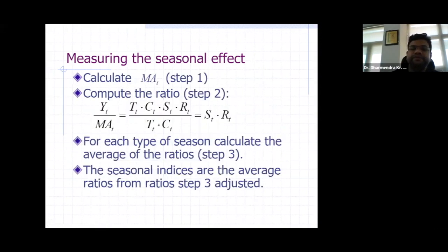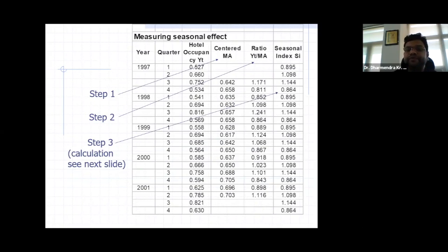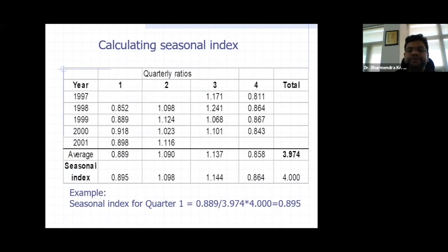In the ratio-to-moving-average method: step one — calculate the moving average; step two — calculate the ratio of the observed value divided by the moving average, leaving only the seasonal and random components. For each type of season, calculate the average of these ratios. For example, with quarterly data, calculate the moving average, then the ratio to moving average, then find the seasonal indices. There is also another method called the link relative method, which is generally used to identify the seasonal components.